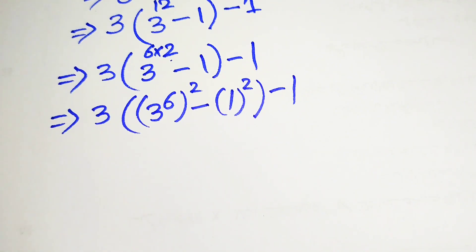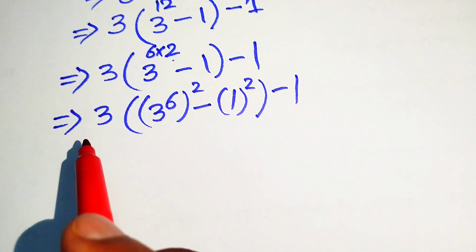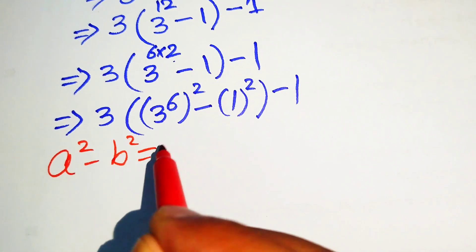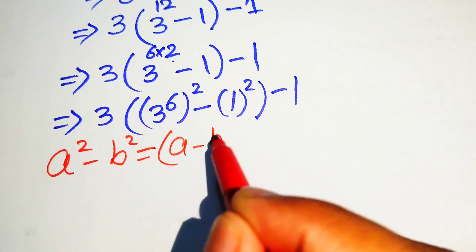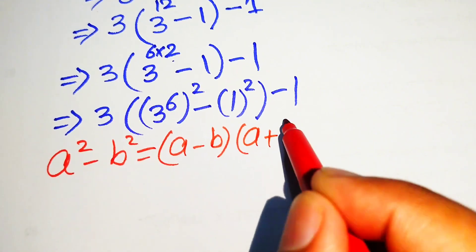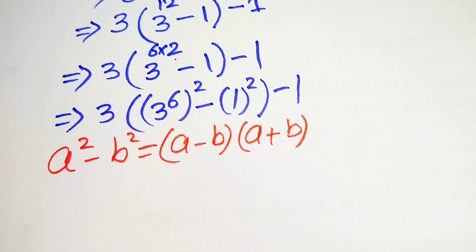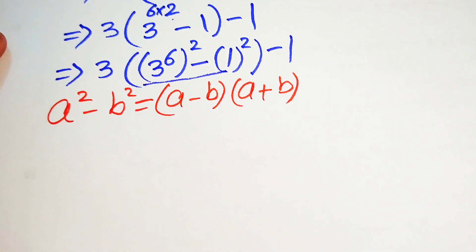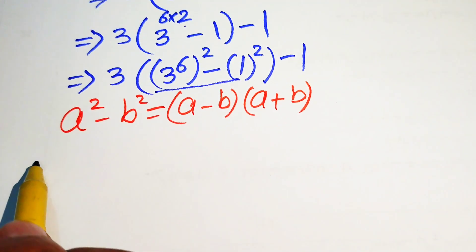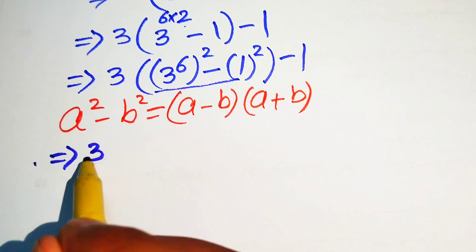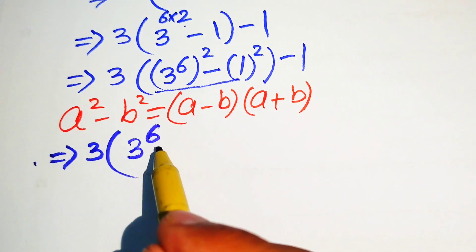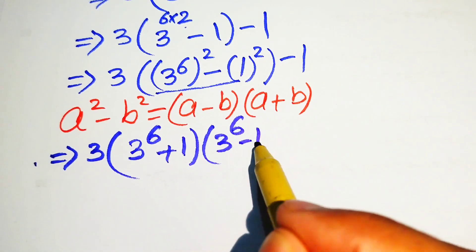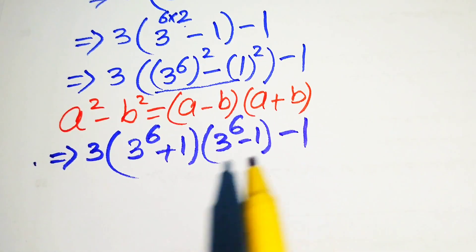In the next step we use the difference of squares identity: a squared minus b squared equals a minus b times a plus b. Applying this formula, we get the expression in the form: 3 to the power of 6 plus 1, times 3 to the power of 6 minus 1, and this is minus 1.